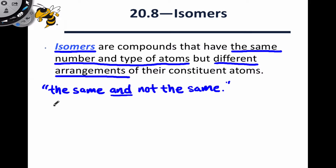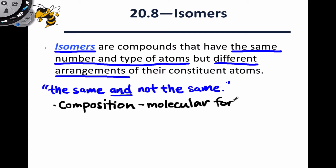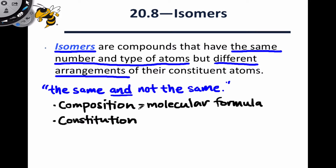Thinking about the ways in which molecules can differ gives us a conceptual framework for thinking about molecular structure and its different levels. At the highest level we have what we might call composition — this is the number and types of atoms within the structure, captured most succinctly by the molecular formula. Molecules with the same molecular formula may differ in how the atoms are connected to one another, and this is what we call the constitution of the molecule. Constitution is the connectivity of the atoms and is represented most succinctly by the Lewis structure.